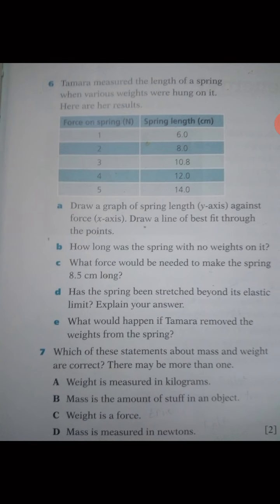Question 7: which statements about mass and weight are correct? Mass is the amount of matter in an object measured in kilograms or grams, while weight is the force of gravity acting on an object measured in Newtons. Statement A — weight is measured in kilograms — is false, because weight is in Newtons. Statement B — mass is the amount of stuff in an object — is correct. Statement C — weight is a force — is true, as gravity is a force. Statement D — mass is measured in Newtons — is false; mass is measured in kg or grams.